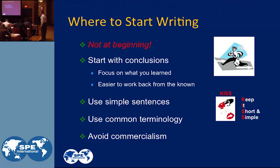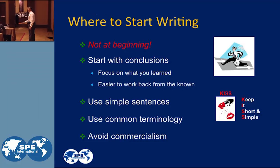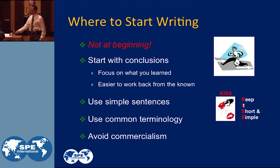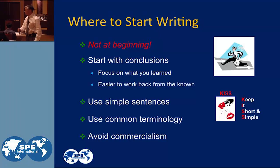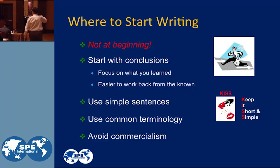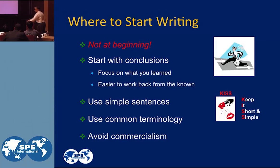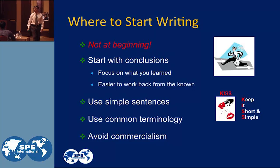You focus on what you've learned through these conclusions and then you can work back from the known. You work back and describe how you got there, and then what references you used to get there in your introduction. This gets you away from writer's block. So that's the way you write a paper — you write it backwards. Look at the conclusions first and write back.